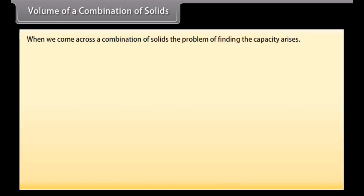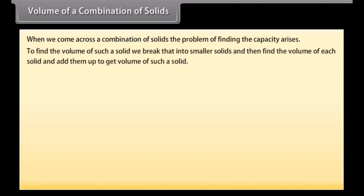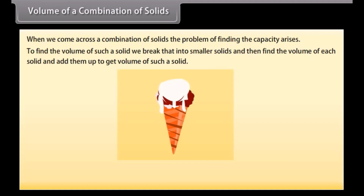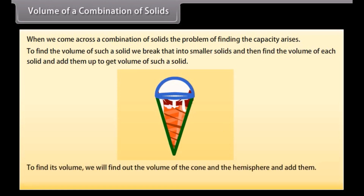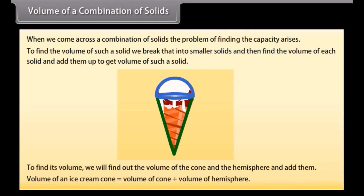Volume of a combination of solids. When we come across a combination of solids, the problem of finding the capacity arises. To find the volume of such a solid, we break it into smaller solids, find the volume of each, and add them up. For example, an ice cream cone is a combination of a cone and a hemisphere. Volume of ice cream cone = volume of cone + volume of hemisphere.